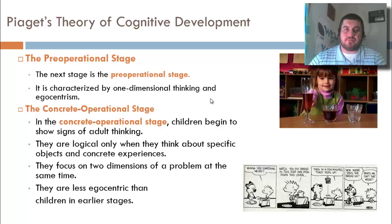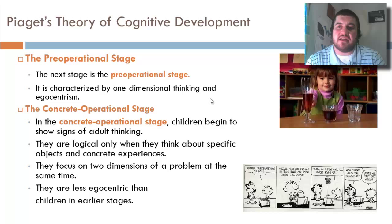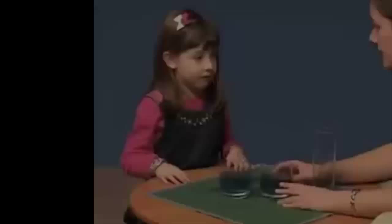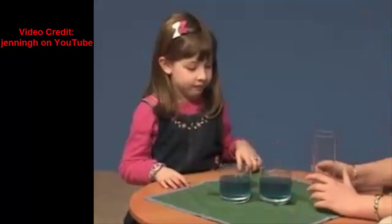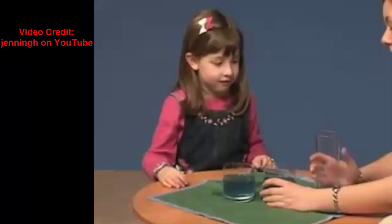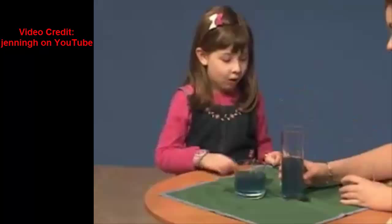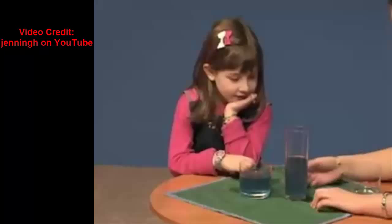Next is the pre-operational stage, from ages two to seven, characterized by one-dimensional thinking and egocentrism. In a conservation task, a child shown juice poured from one glass into a taller glass will say the taller glass has more juice — she's only thinking about one dimension. When asked why that glass has more, she says, 'Because it's taller.' Conservation refers to internally representing something about an object despite its changing appearance.